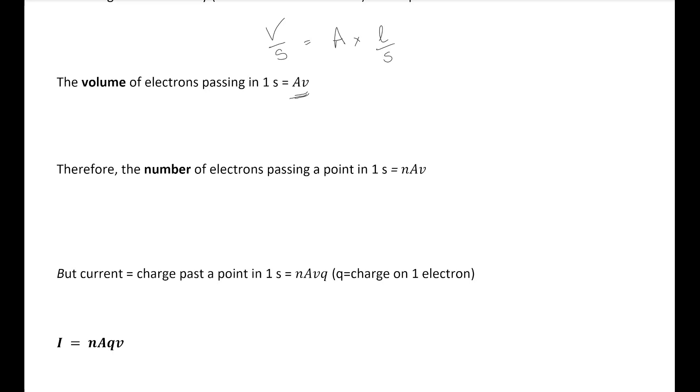So volume per second is going to be equal to area times length per second. And of course, length per second is velocity. So we end up with the volume of electrons per second is our cross-sectional area times our velocity. So if we want to know the number then of electrons, we know the volume of electrons. If we want to know the number of the electrons, then we have to take that volume and multiply it by the number of electrons that would be in every meter cubed. So we know that n is the number per meter cubed. So if we multiply our volume of electrons every second by n, we'll know the number of electrons every second. We also know that current is the charge per second. So then if we have the number of electrons and we multiply that number of electrons by the charge of each electron, which we know is q, then we end up with the charge per second, which is current.